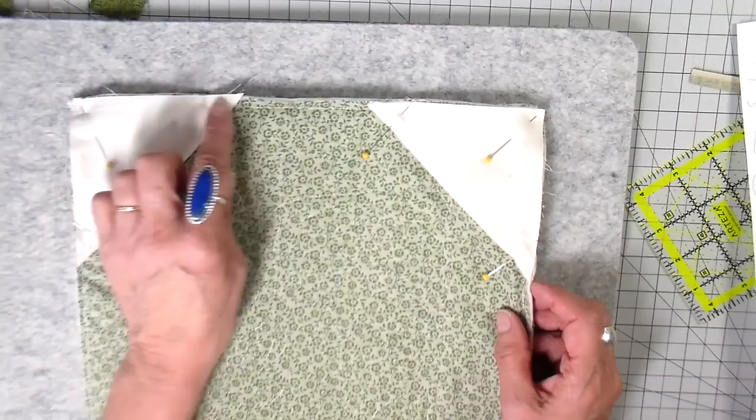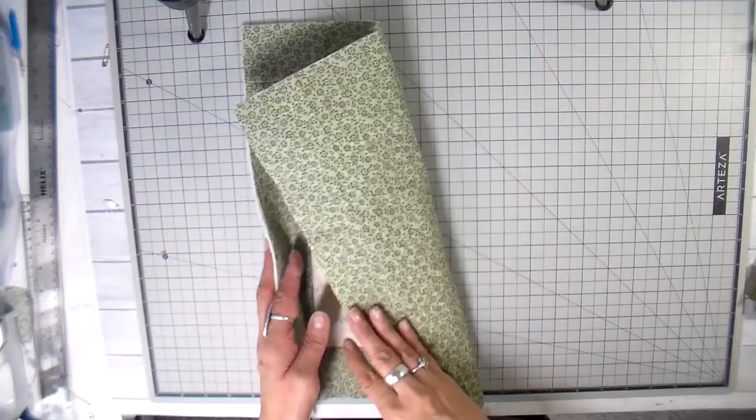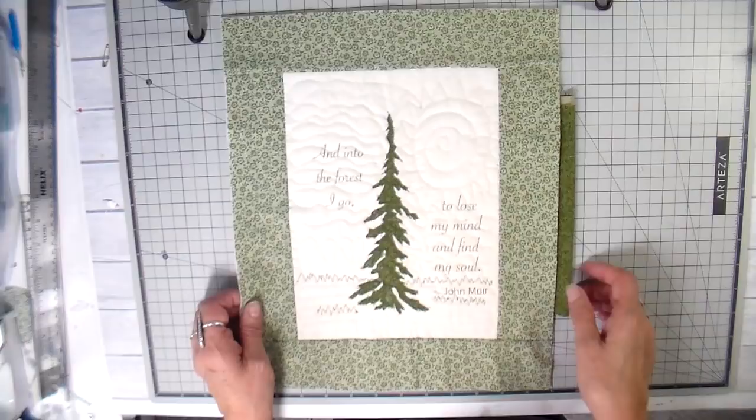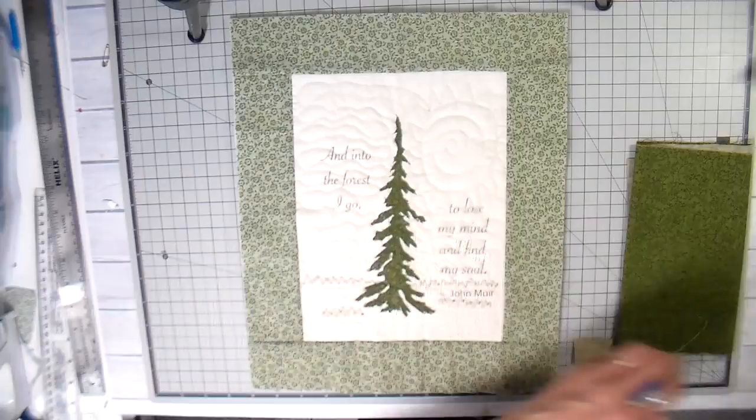Now it's on to that favorite binding method. You want to measure what you have here, what you're working with. So you measure your sides, you measure your top. I'm just kind of figuring out which piece or what color I want. I did decide to go with that darker green. You want to measure your sides, you want to measure your tops, and you want to add it all together and add 12 inches.